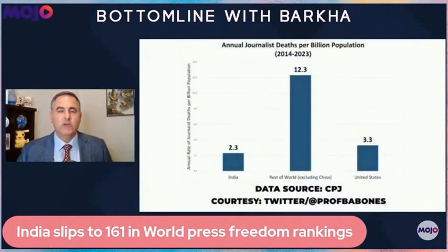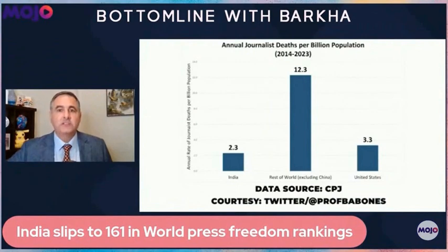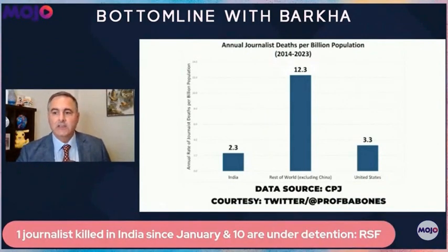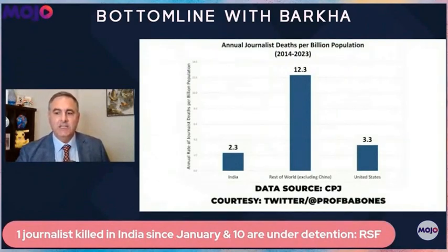So, for example, in addition to this chart, I've also calculated the journalist death rate in India per million population. That's approximately 4.1 per million annually in India.